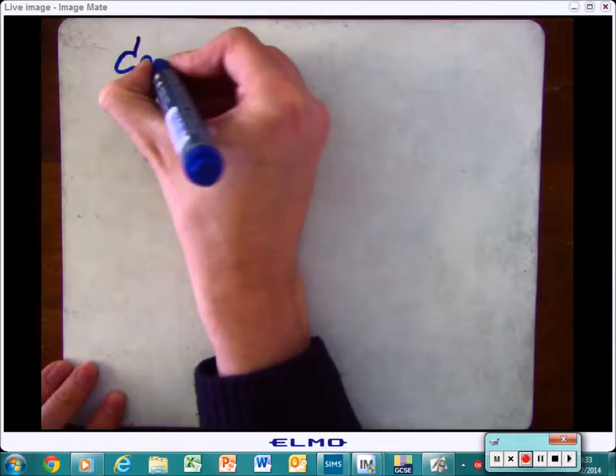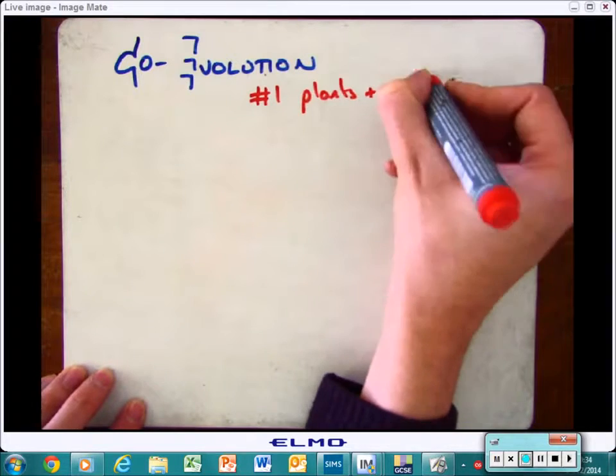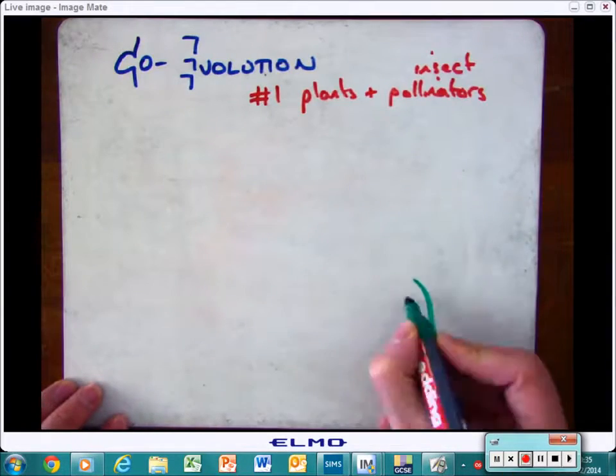Okay, this final section of the video then is going to have a look at how plants and animals have co-evolved together. There are two ways that we're going to look at, and the first one is plants and insect pollinators.